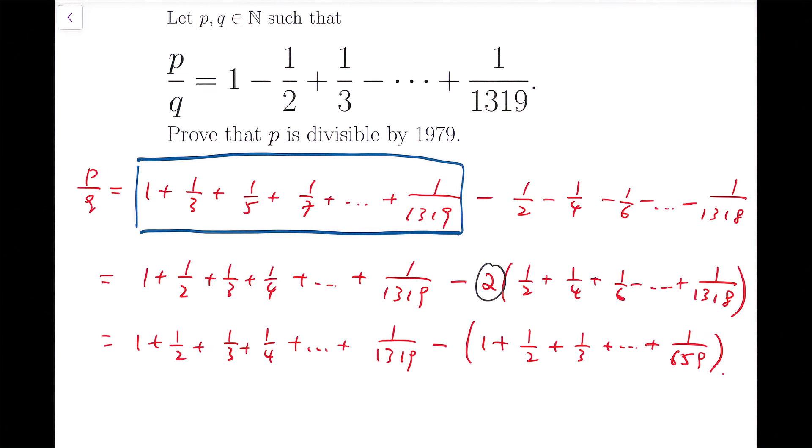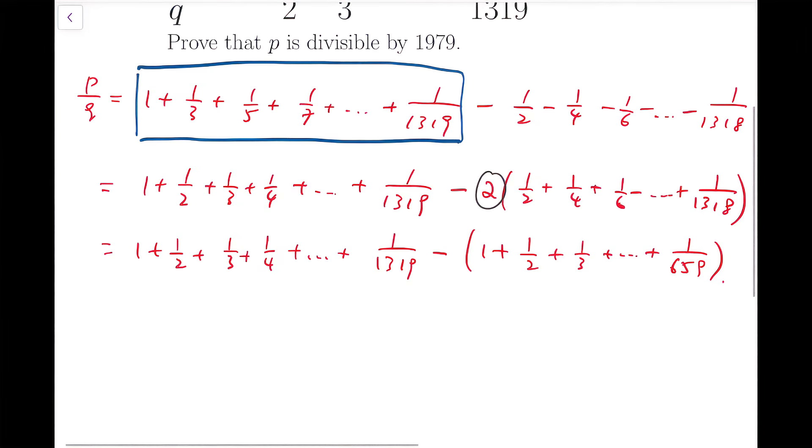And now, I have two finite harmonic series with me, and I'm going to cancel them out. So this expression now becomes fractions starting from 1 over 660, 661, all the way up to 1318 and 1319.